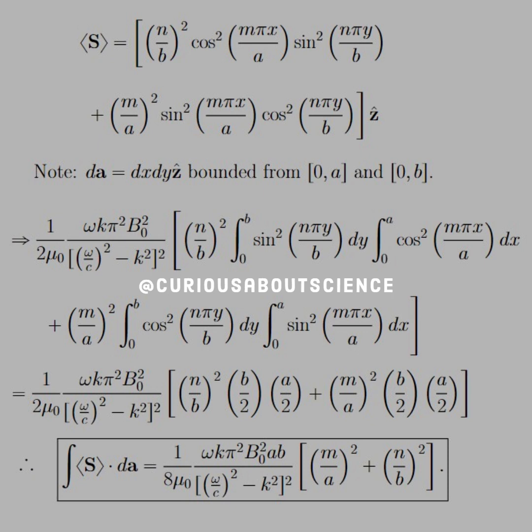we have N over B squared times B over 2 times A over 2 from the squared components of the sine and cosines. And then for the M over A, we have another B over 2 and A over 2, and we need to consolidate this down.